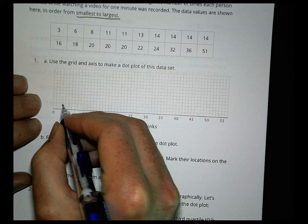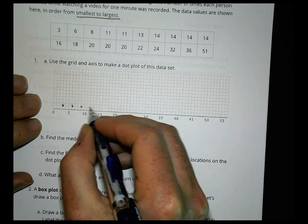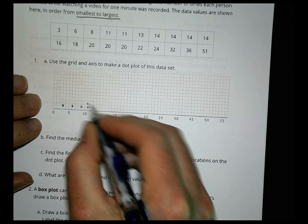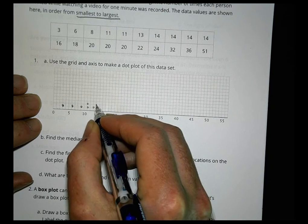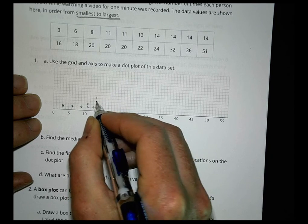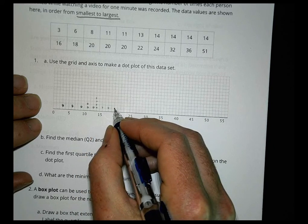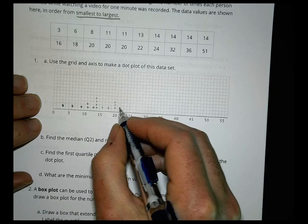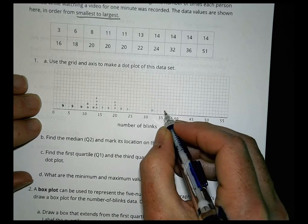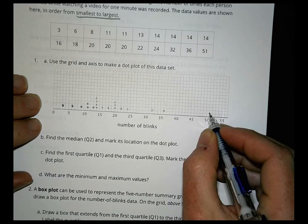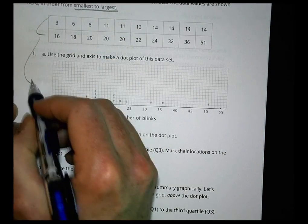So each line represents a value. We have one at three, one at six, one at eight, two at eleven, one at thirteen, four at fourteen, one at sixteen, one at eighteen, three at twenty, one at twenty-two, one at twenty-four, one at thirty-two, one at thirty-six, and one over here at fifty-one. So there's our dot plot. We're taking this data here and making it on the dot plot there.